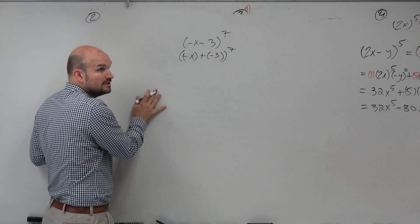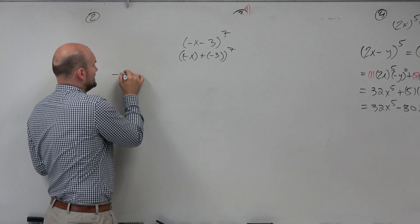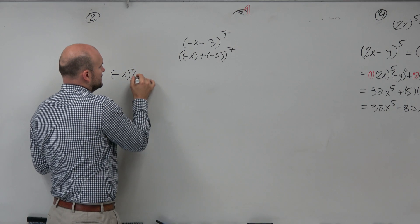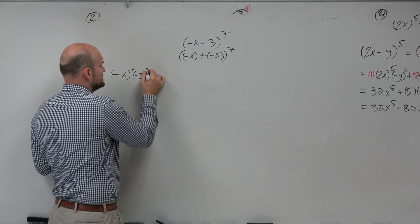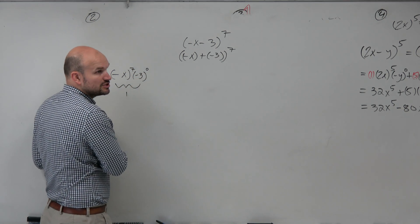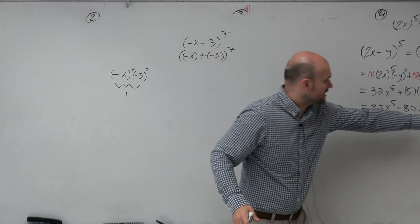The first term of the binomial expansion would be negative x to the 7th, negative 3 to the 0. That'd be the first term in the expansion. First, second, third, fourth.